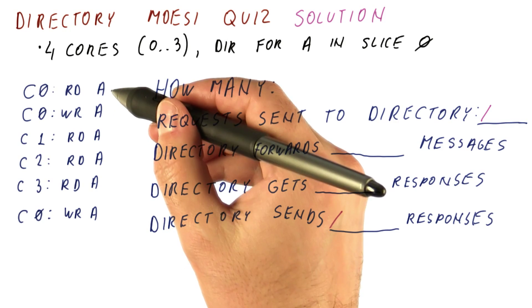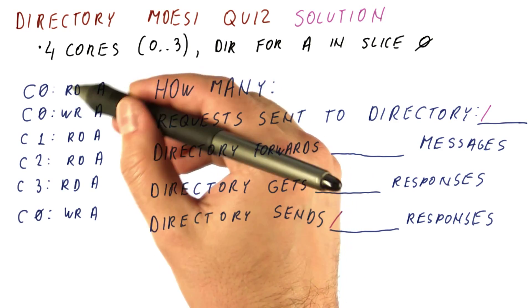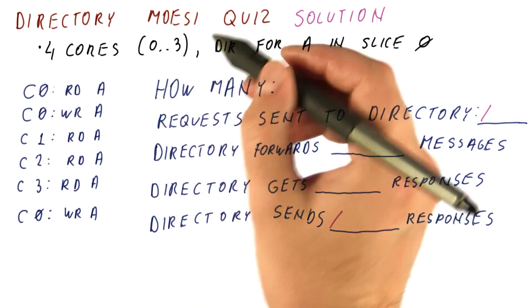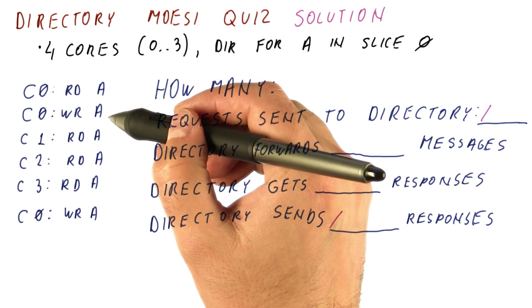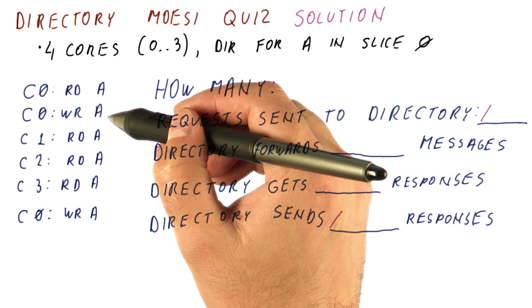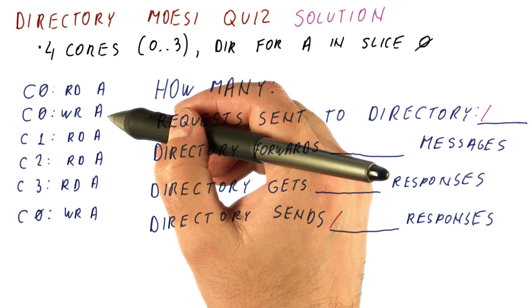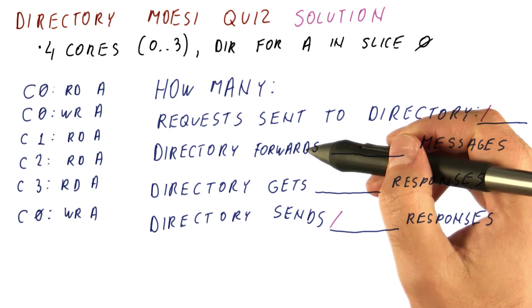When there is a write, core 0 gets this block A in exclusive state because MOESI has such a state. Core 0 can do the write without telling anybody, so there is no request sent to the directory and no directory activity as a result.